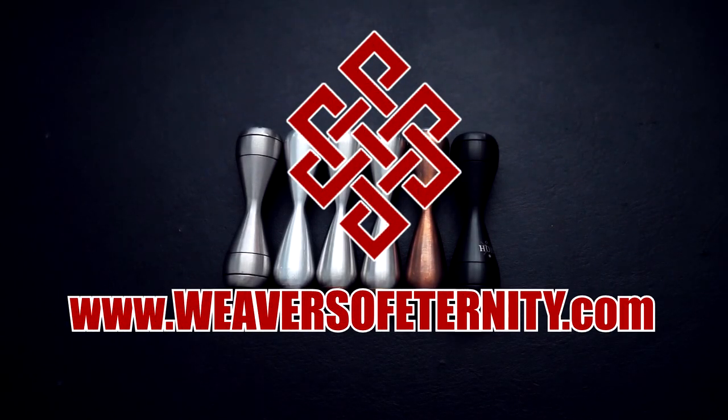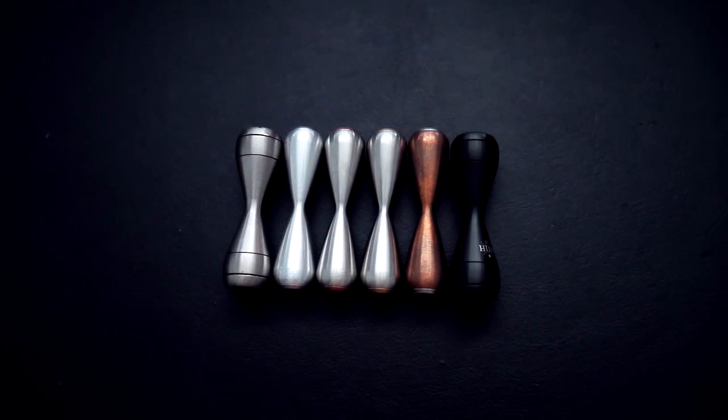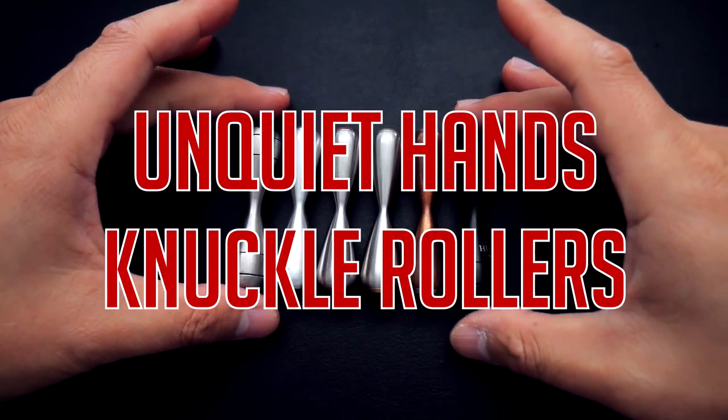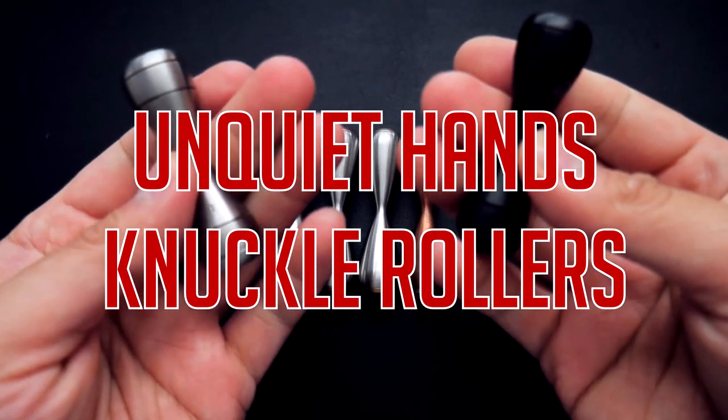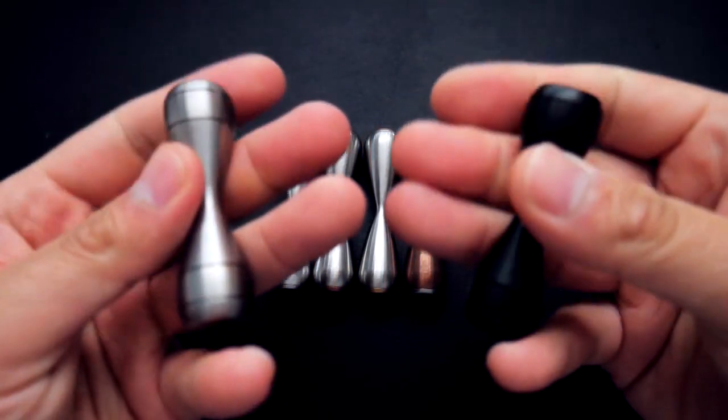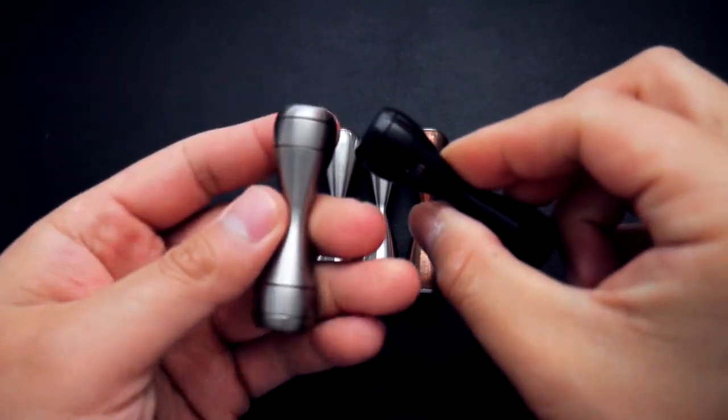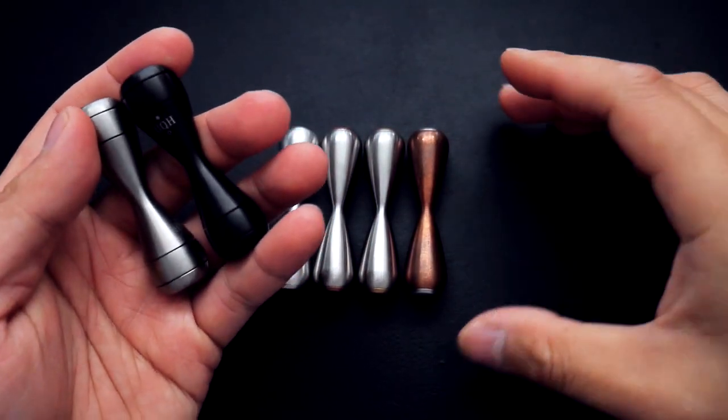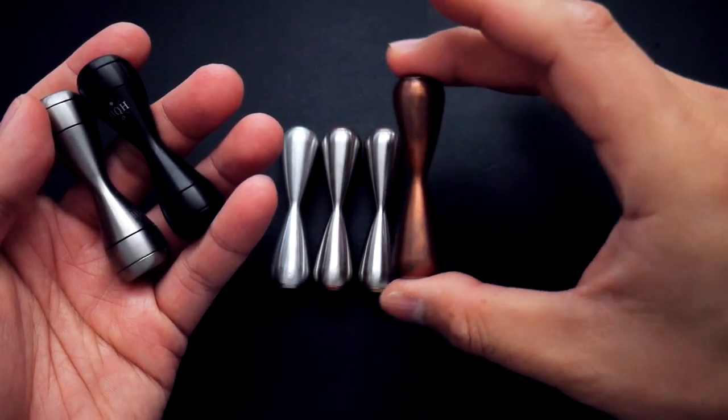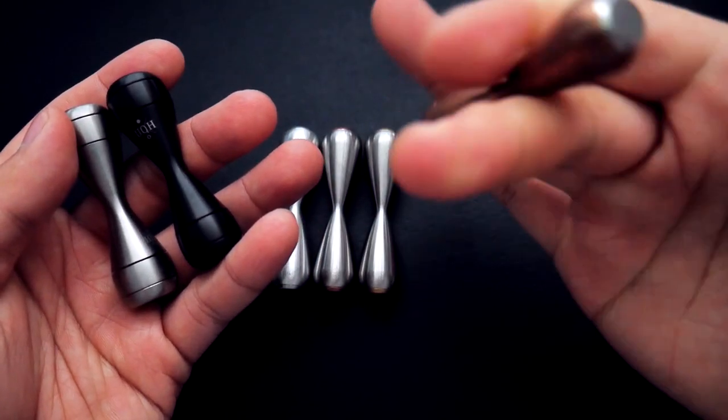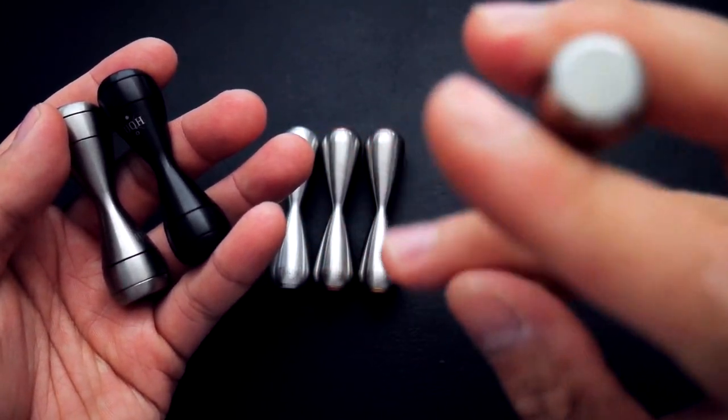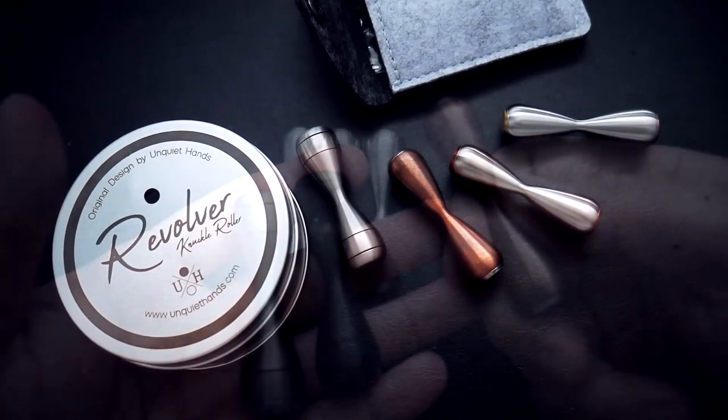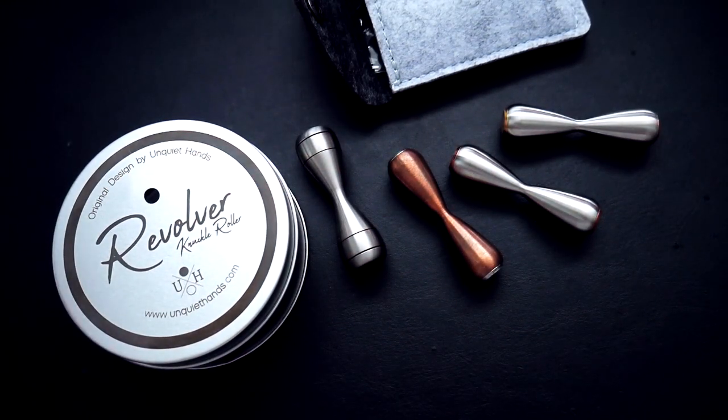Hey what's going on guys, Tim here again. Got another knuckle roller review for you today. We are looking at a few awesome products from a great company called Unquiet Hands. We're looking at two different models: the Revolver knuckle roller and the Hourglass knuckle rollers. Let's get right into it.